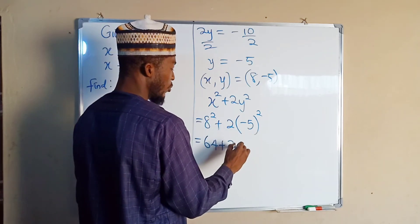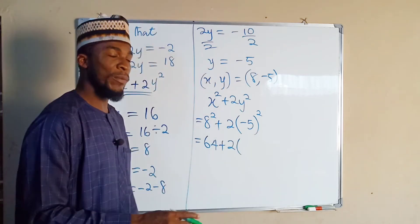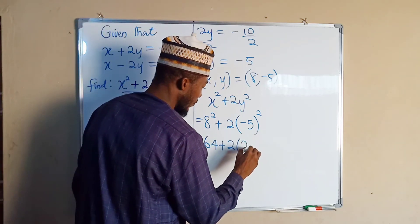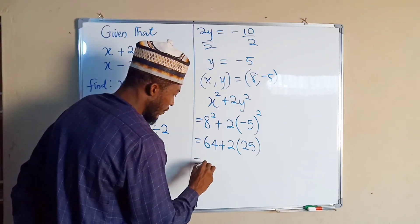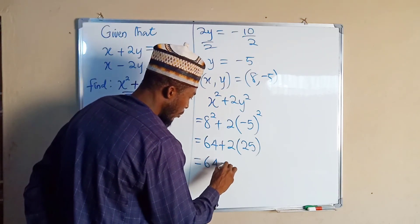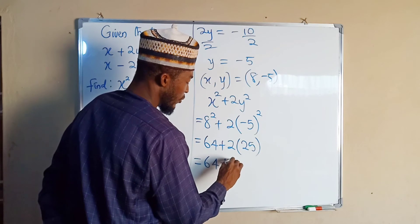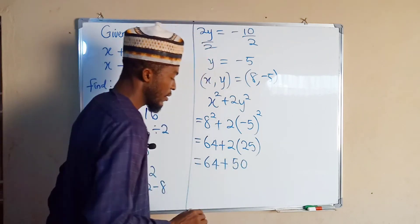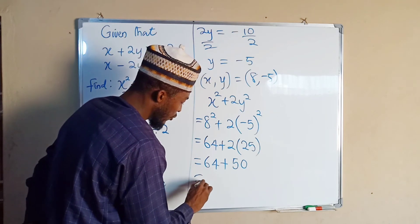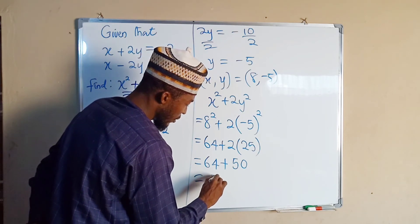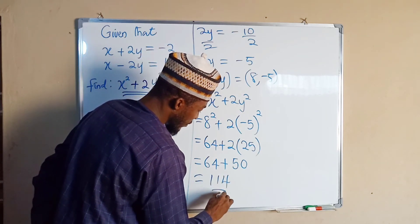Plus 2 multiplied by (-5)² is 25. We have 64 + 2 times this equal to 50, and 64 + 50 is equal to 114. Hence this is the solution for x² + 2y².